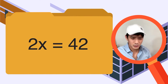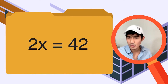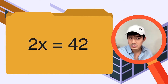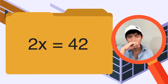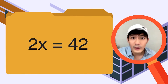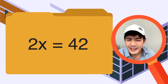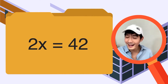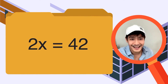2x is equal to 42. Ayon dito, kapag ang value ng x ay minultiply mo sa 2, ang makukuha mo ay 42. Since we need to solve for x, kailangan natin itong i-isolate — gawin 1 yung coefficient nito. Ano yung coefficient? Ito yung number sa tabi ng unknown variable.